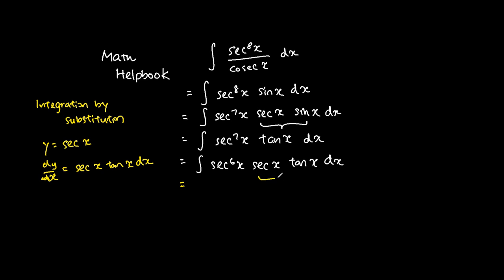So from here itself we will sub in the sec x tangent x dx as dy. And then this sec to the power of 6x is just y to the power of 6. And then we do an integration. So this is very straightforward. This is y to the power of 7 over 7 plus c.